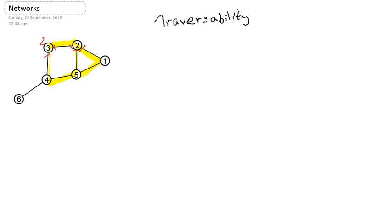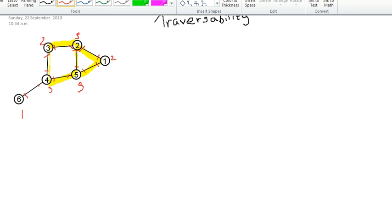I have two arcs there, so my node is even. I have three arcs here, so my node is odd. I have three arcs here, so my node is odd. And I have one arc here, so my node is even.